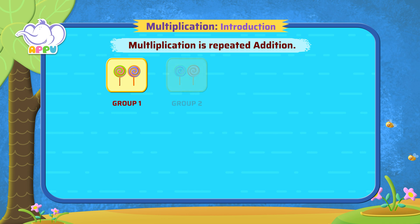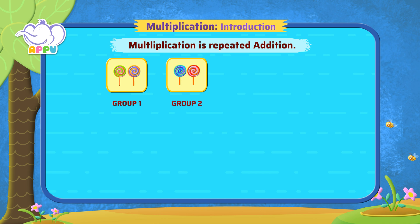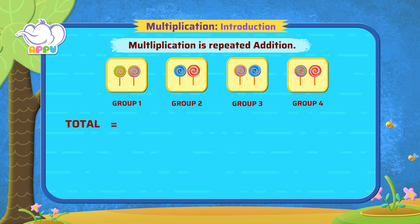We see two lollipops, each in four groups. So how do we find the total number of lollipops? We add two four times: two plus two plus two plus two, which equals eight.